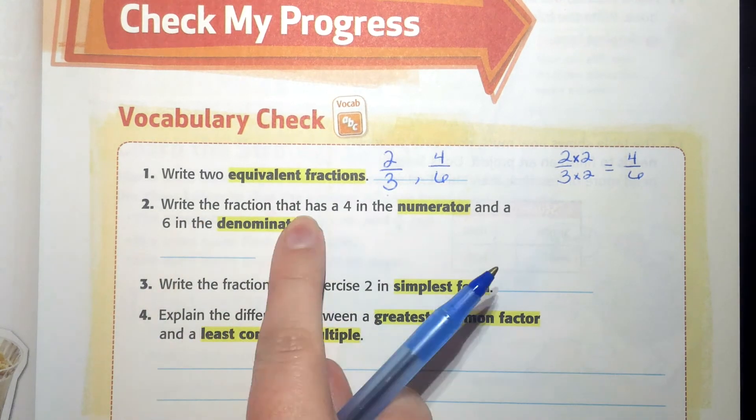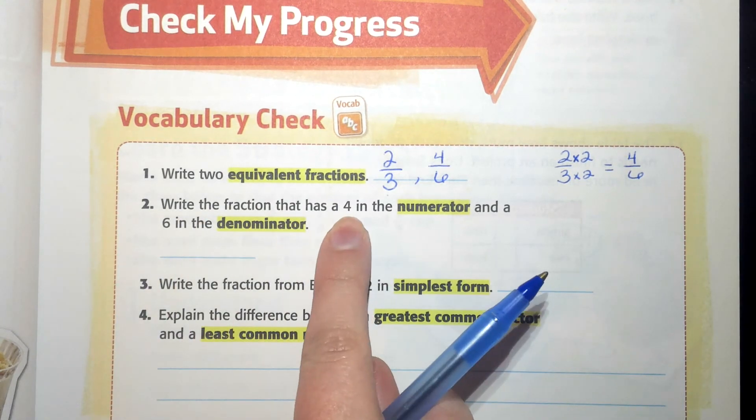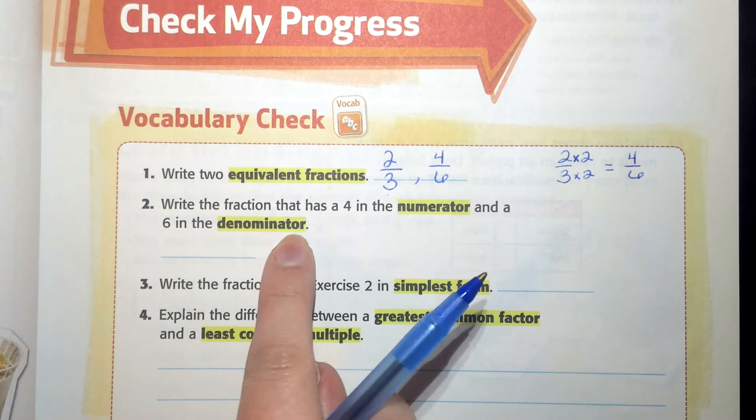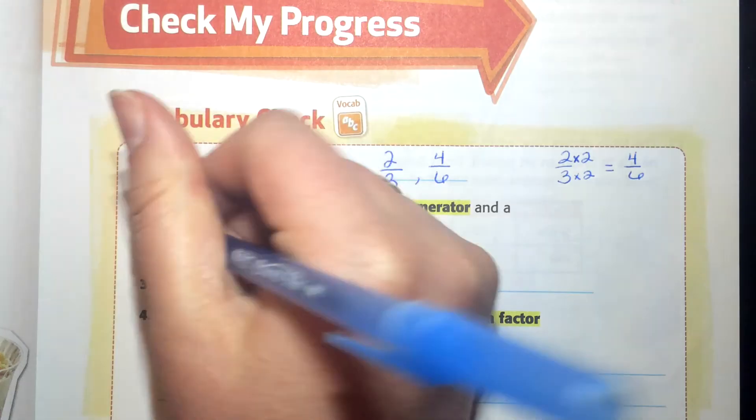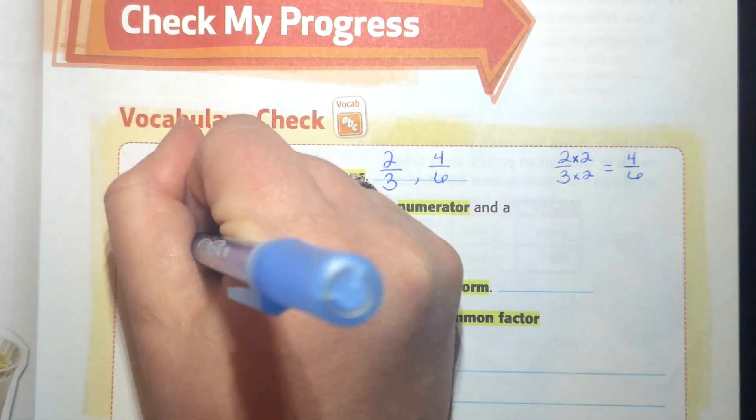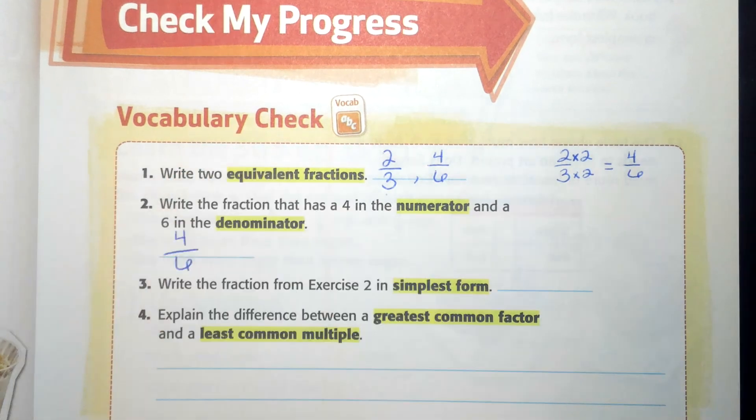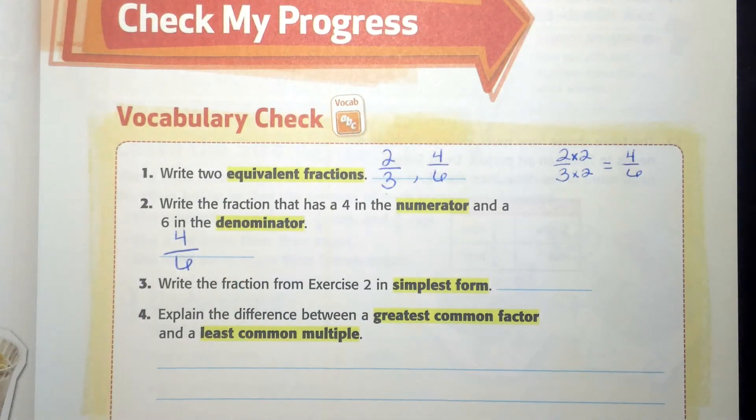Write the fraction that has a four in the numerator and a six in the denominator. So a four in the numerator and a six in the denominator is four-sixths. I didn't even plan that. How funny.